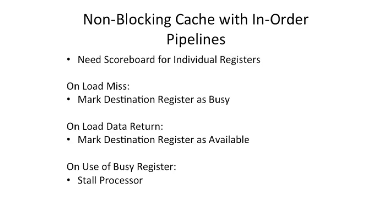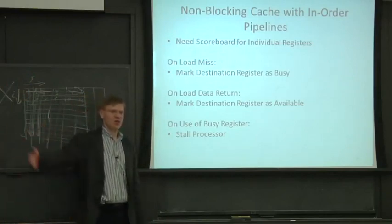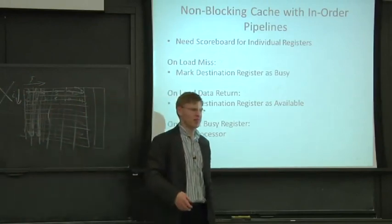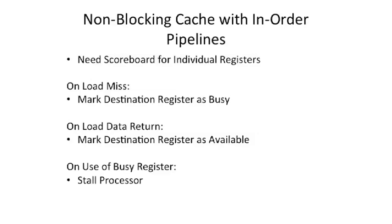For in-order machines, you can add a scoreboard for each individual register. Unlike a traditional scoreboard tracking data sources, this is a special bit indicating 'this register is out in the memory system — if you try to access it, just stall.' It's a variable-length wait, so the scoreboard can't say 'ready in five cycles' because the data is out in main memory. On a load miss, mark the destination register as busy; when the data returns, mark it as available and unstall the processor. If no instruction tried to use that register while it was outstanding, the processor never stalls at all.